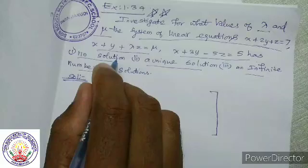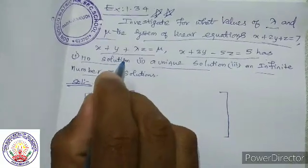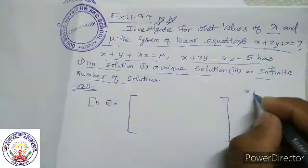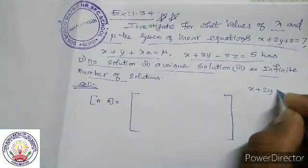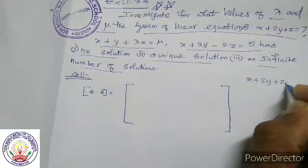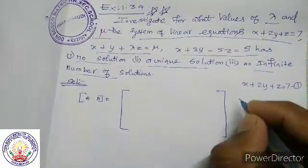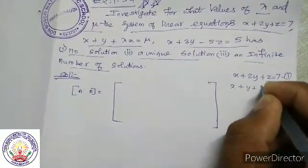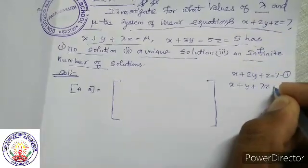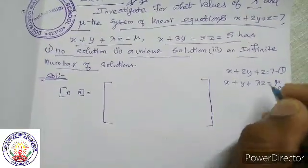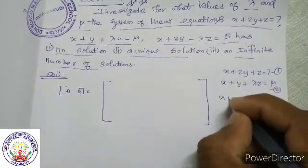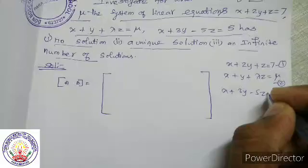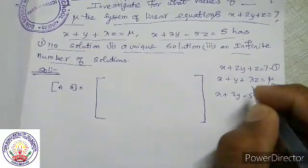Step 1: convert to row echelon form. Equation number 1: x plus 2y plus z is equal to 7. Second equation: x plus y plus lambda z is equal to mu. Third equation: x plus 3y minus 5z is equal to 5.